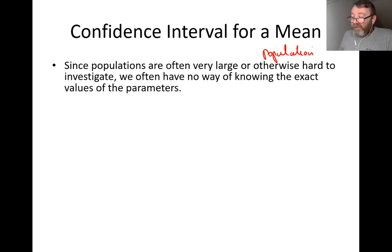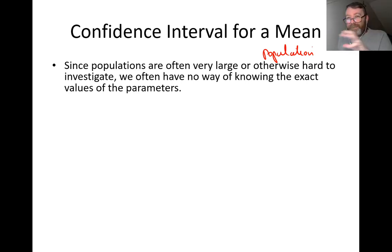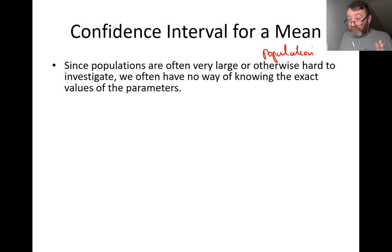Since populations are often very large or otherwise hard to investigate, we often have no way of knowing the exact value of the parameter. What's the average age of everybody in Ireland? No way to count five and a half million people. So instead, a number of samples are taken, their means are calculated, and the sample means are used to build a 95% confidence interval — with 95% confidence, the average age lies between these two values.